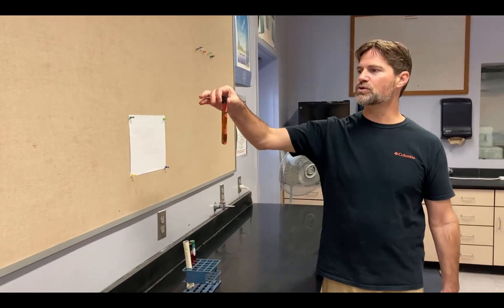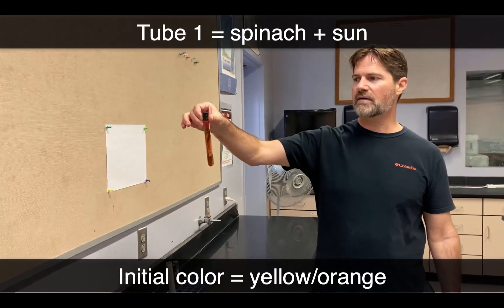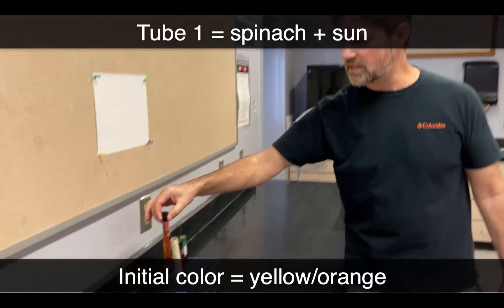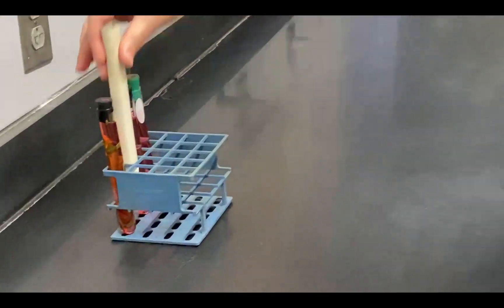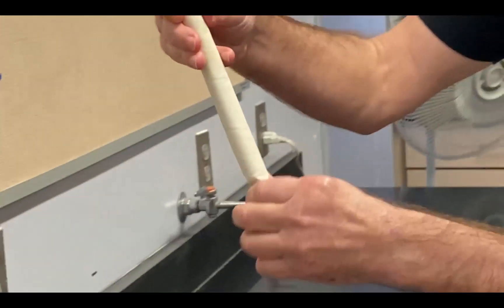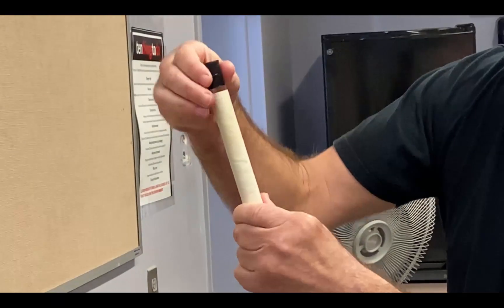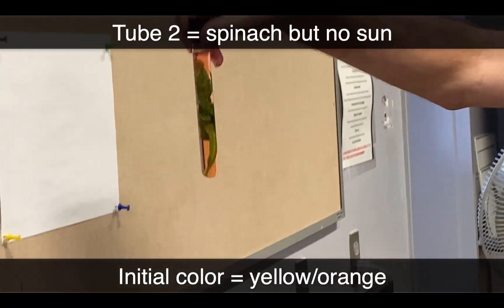I have test tube number one with spinach in it that has not been placed in a photoblocker. Test tube number two is inside a photoblocker and also has spinach inside of it.